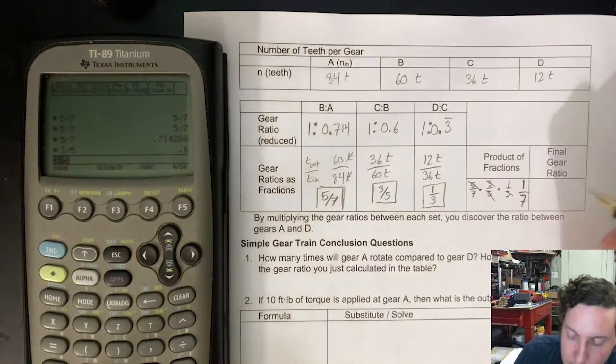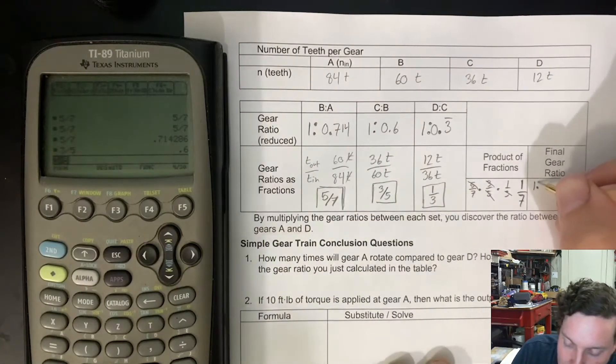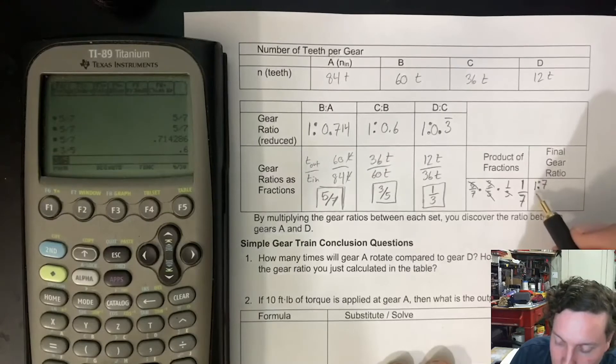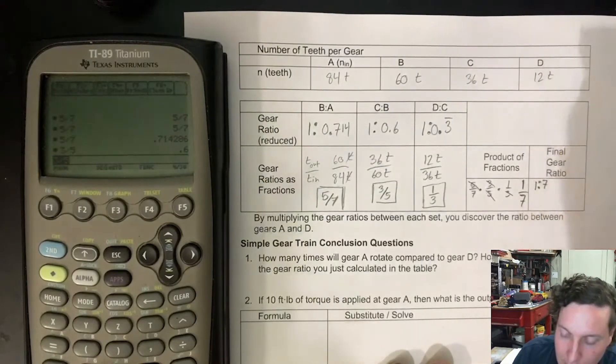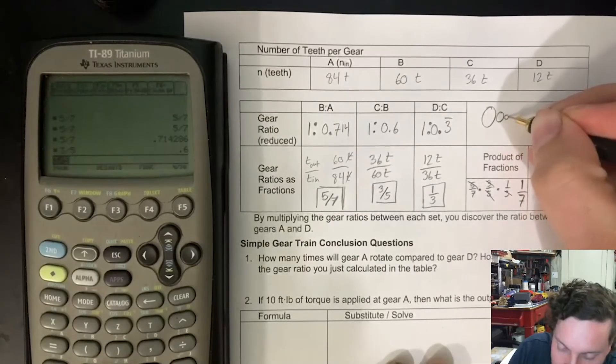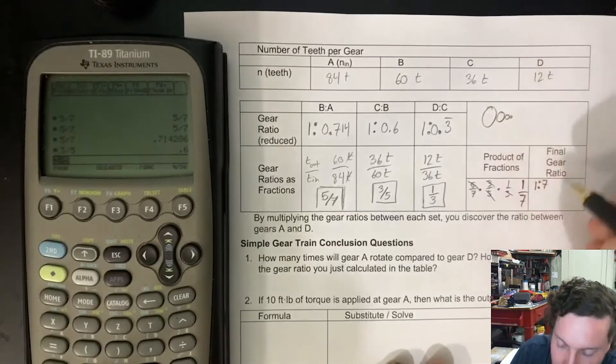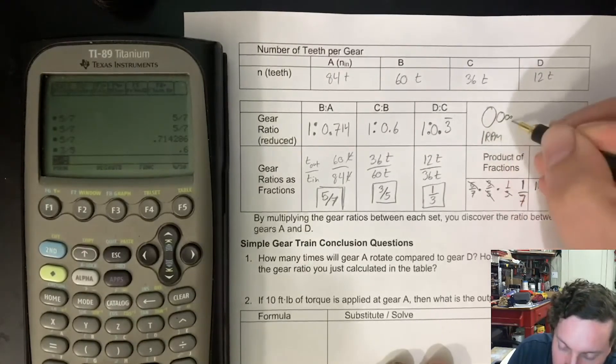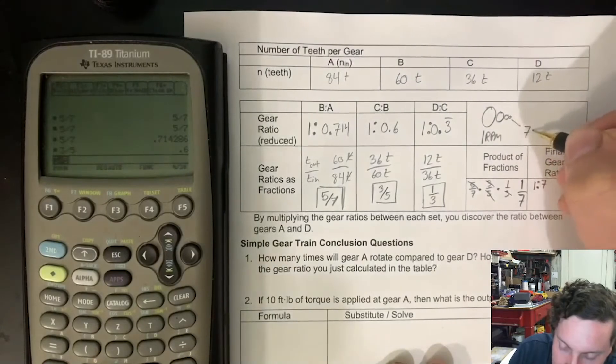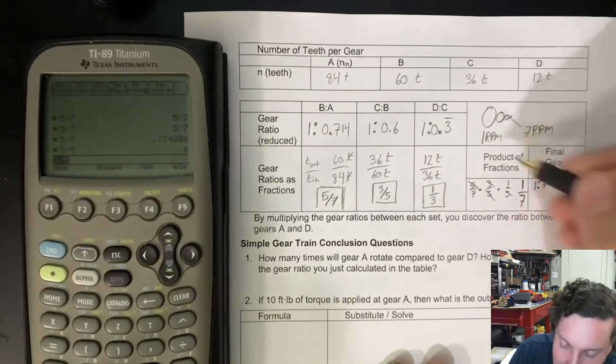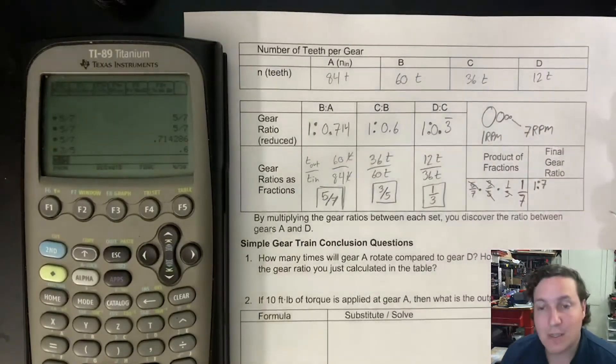Or we can put it as a 1 to 7 ratio. That's basically saying that for every one rotation of our driver gear, our smallest gear will make 7 rpm. You don't need to do that sketching, but that's basically what the final gear ratio is meaning.